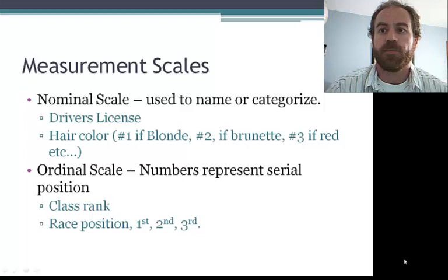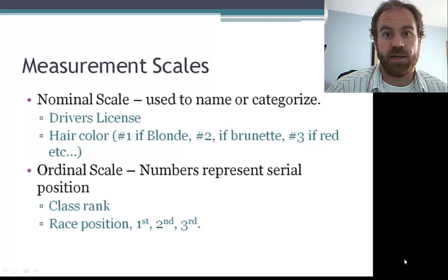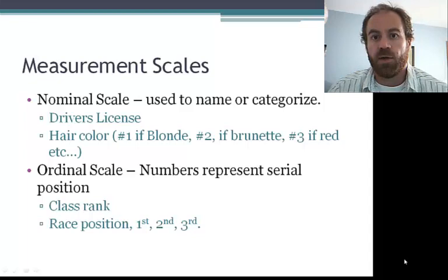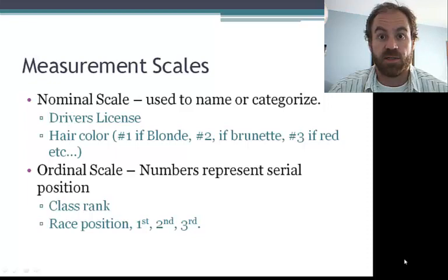So our measurement scales. First of all, we have a nominal scale. Nominal means in name only. So a driver's license number, for example, is just a number assigned randomly to each license. It doesn't really mean anything. Your number will be different from mine, but that doesn't mean that you're a better driver or worse driver than me. It's just a different one.